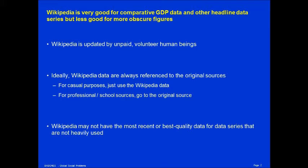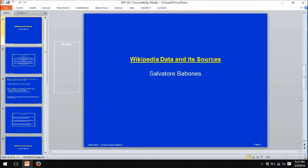Ideally, Wikipedia data are always referenced to the original sources. If you're just using Wikipedia casually — for example, if you want to know for a classroom discussion the comparative life expectancy in the United States versus Brazil — sure, check Wikipedia. If you're doing professional research, something for a corporate audience, a research audience, an academic journal, or if you're writing a school paper, definitely always go to the original source. Wikipedia will tell you where they got the data, so just go to that place and get it yourself. Wikipedia may not always have the most recent or best quality data for data series that are not heavily used, and I'll illustrate some of this today.